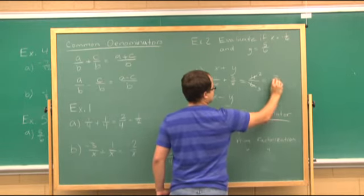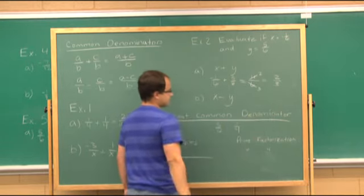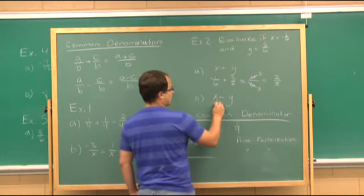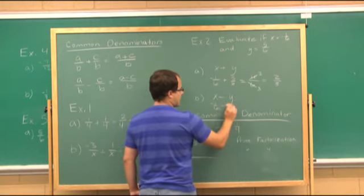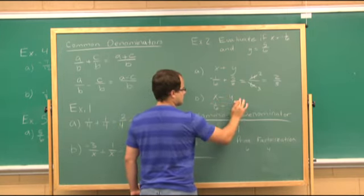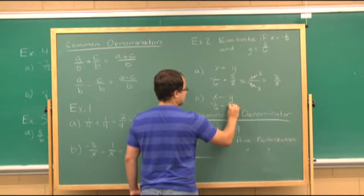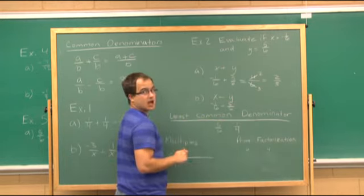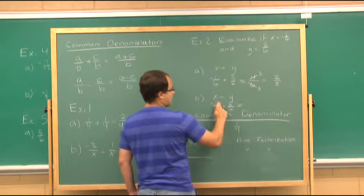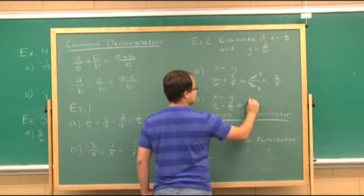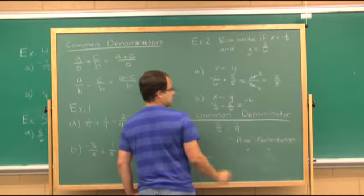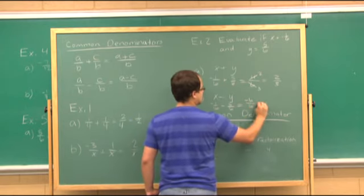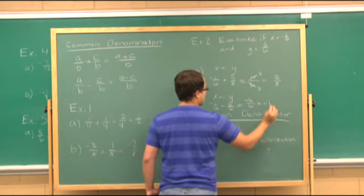Six reduced by two is three, so our final answer is two thirds. Now x minus y: negative 1/6 minus 5/6. They have common denominators, so negative one minus five is negative six, same denominator of six. Negative six over six is negative one.